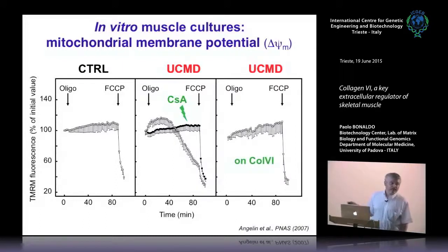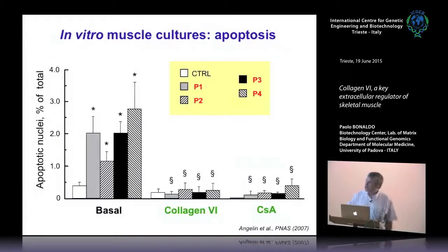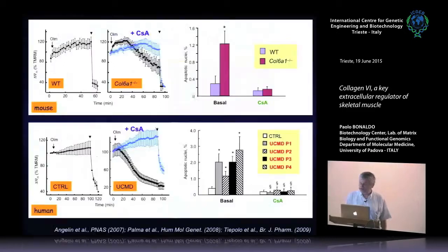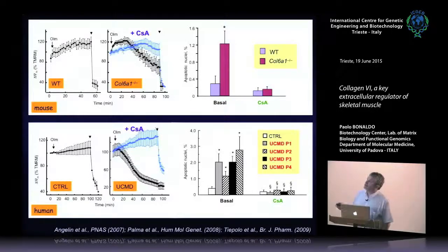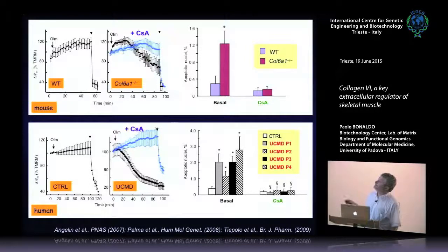Apoptosis in patient muscle fibers can also be restored in vitro by plating over collagen 6 or by adding cyclosporin A. Comparing mouse and human there is very strong similarity concerning the defects: mitochondrial dysfunction reversible by cyclosporin A, depending on PTP opening, and elevated apoptosis.